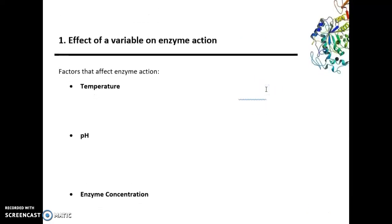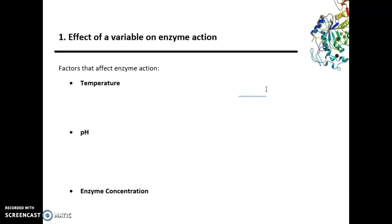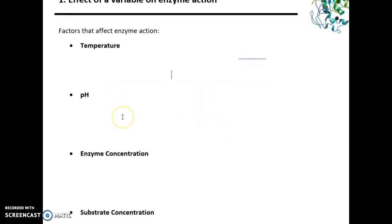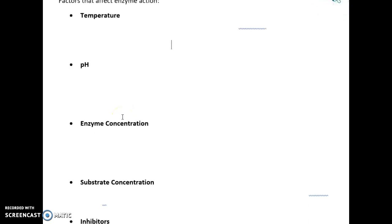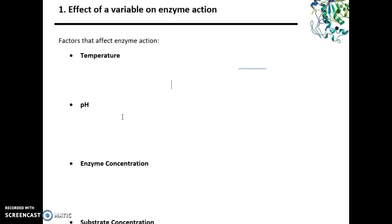Hello and welcome to TeachingBio. Today we're going to be looking at the first required practical for AQA A-level biology, and that is the effect of a variable on enzyme action. The factors that they could ask in the exam are temperature, pH, enzyme concentration, substrate concentration, or the use of an inhibitor.